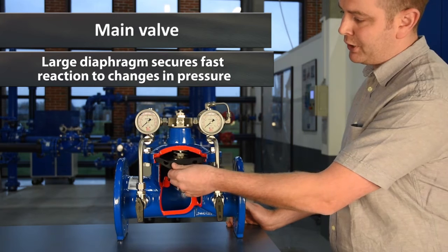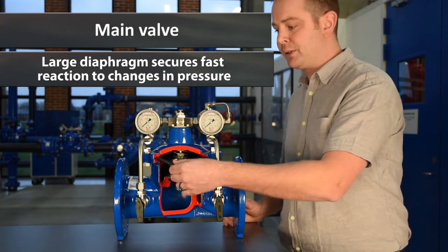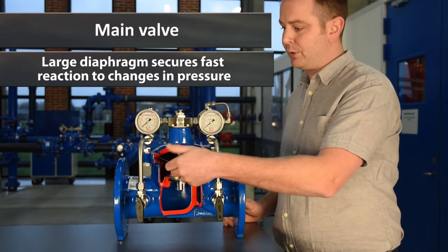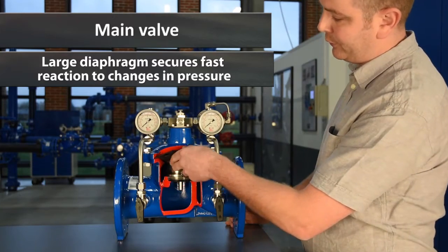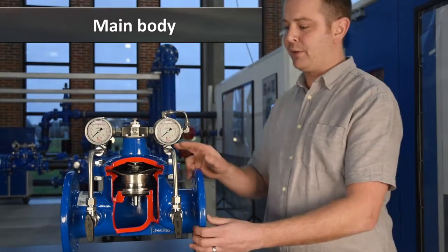The diaphragm is a large surface area, which means we can have speed of control and no stretch of the diaphragm when the valve is in the fully open or the fully closed position.